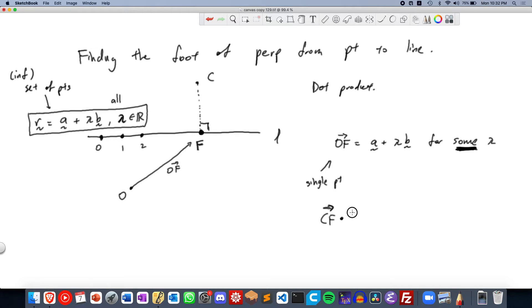So that means CF dot the directional vector of the line is 0. Because the directional vector of the line will be something like this. And CF is CF or FC. That's FC, right, doesn't really matter. But FC dot B is 0. So FC is like this. So FC dot B, the directional vector of the line is 0.